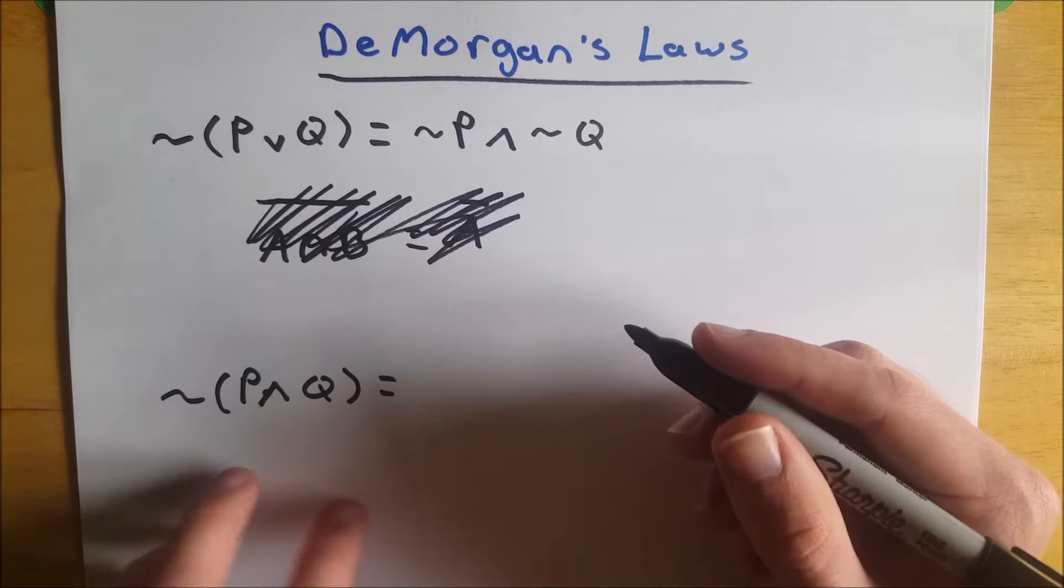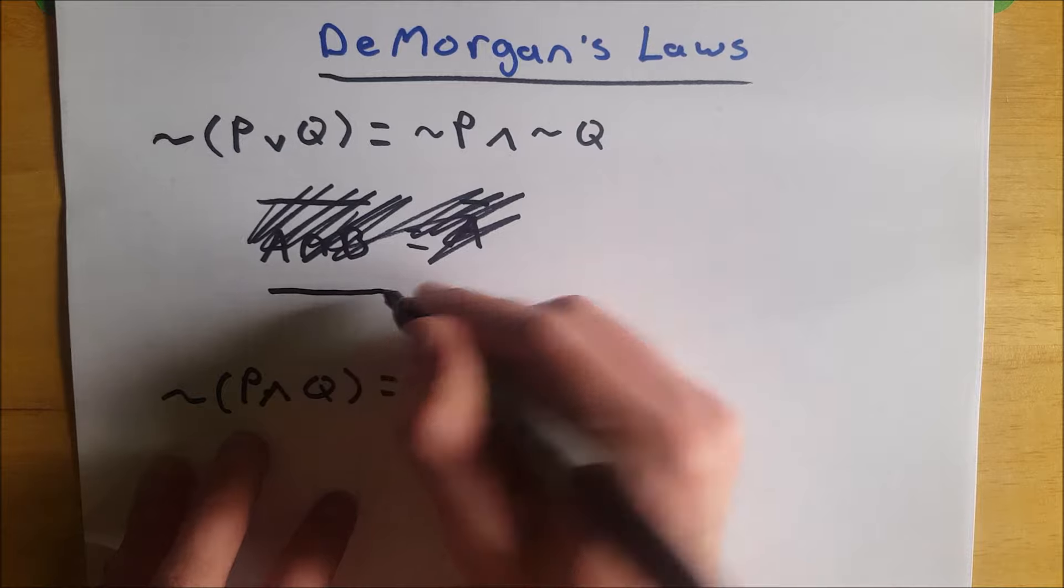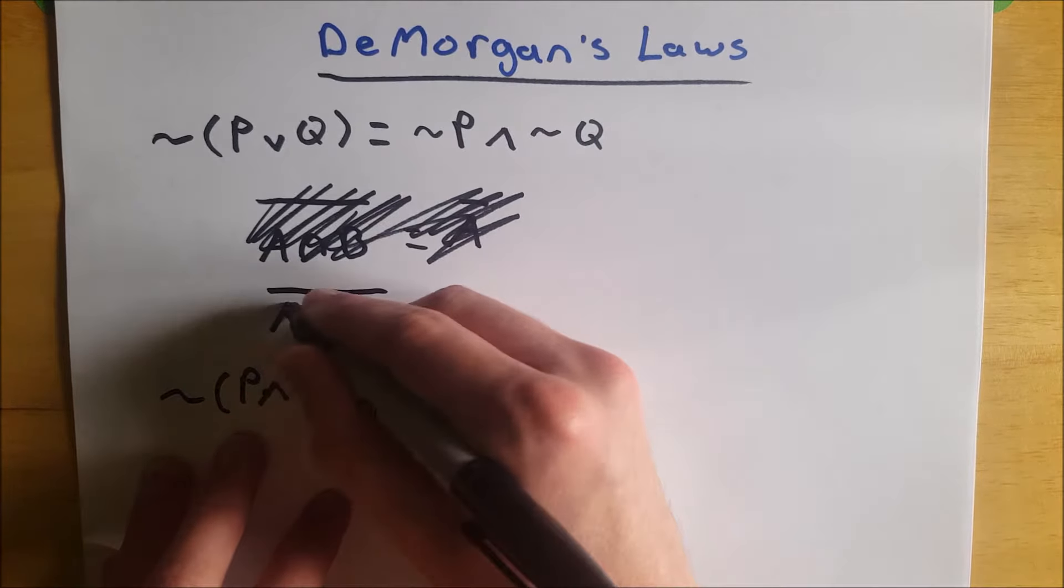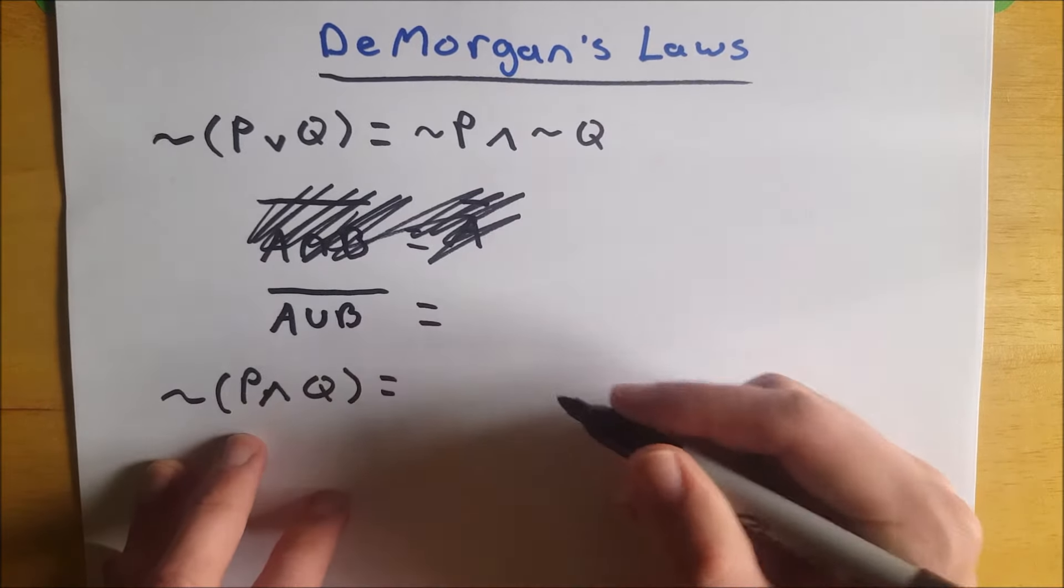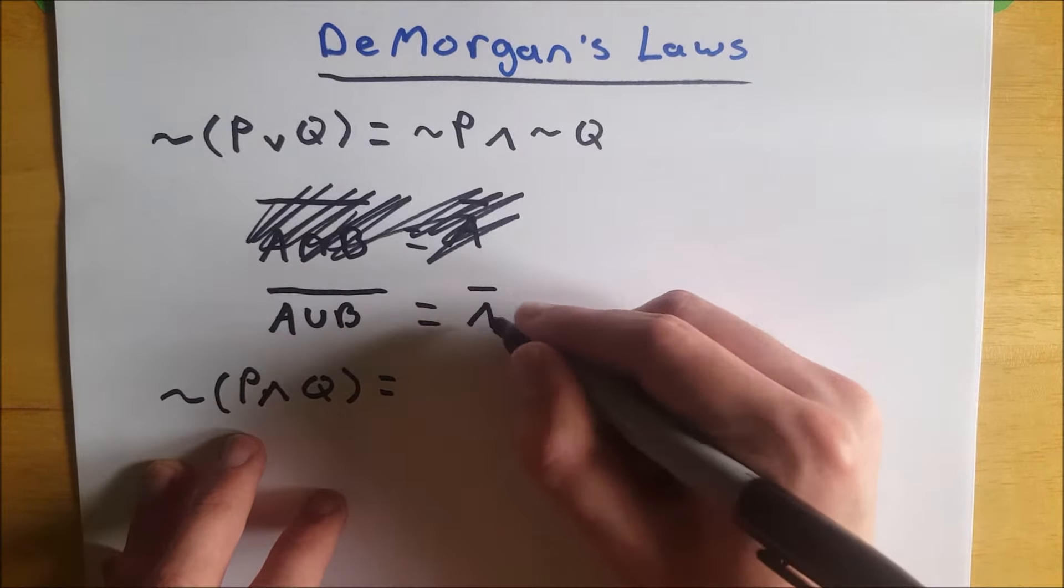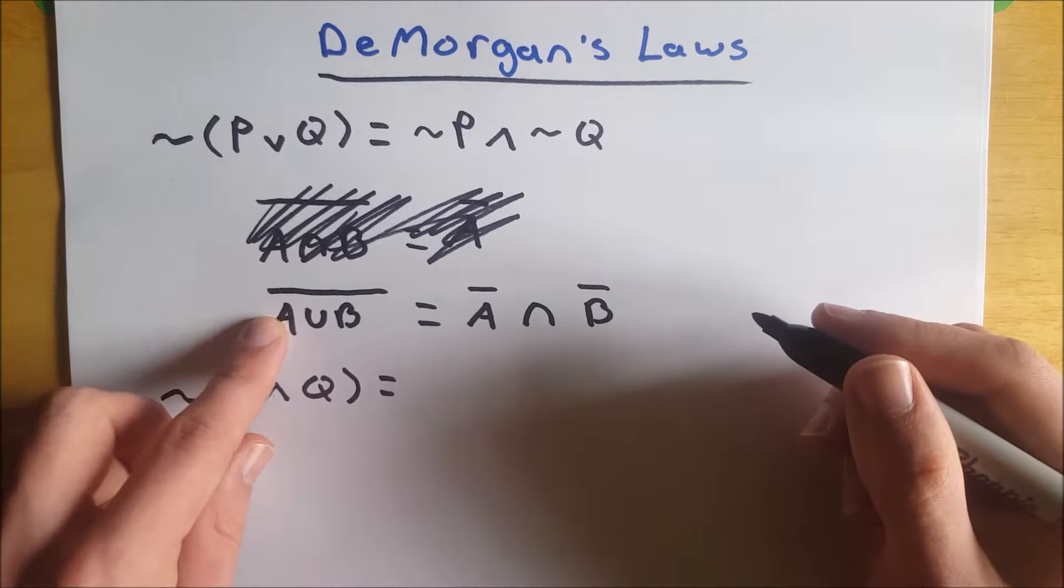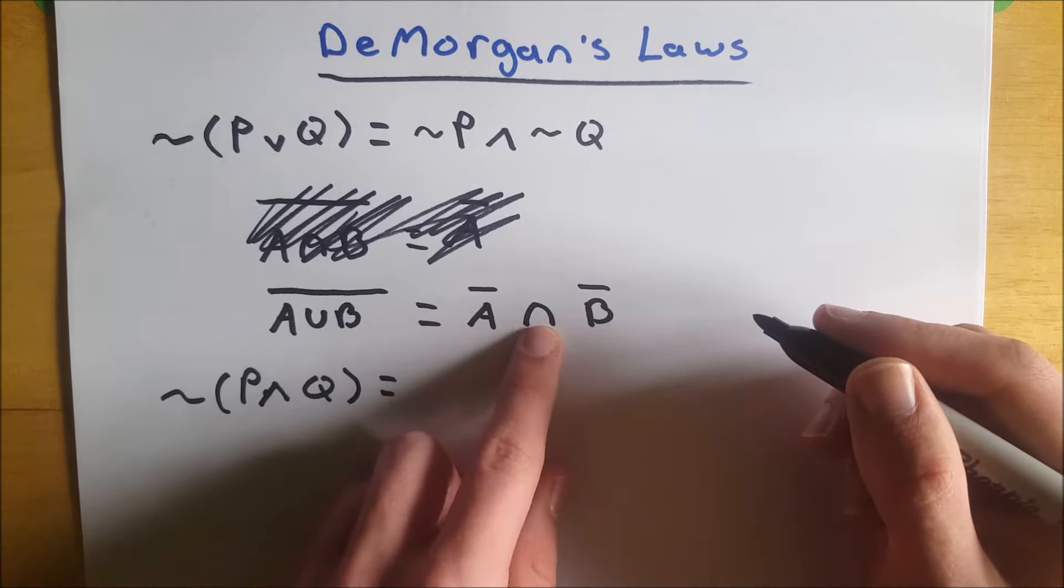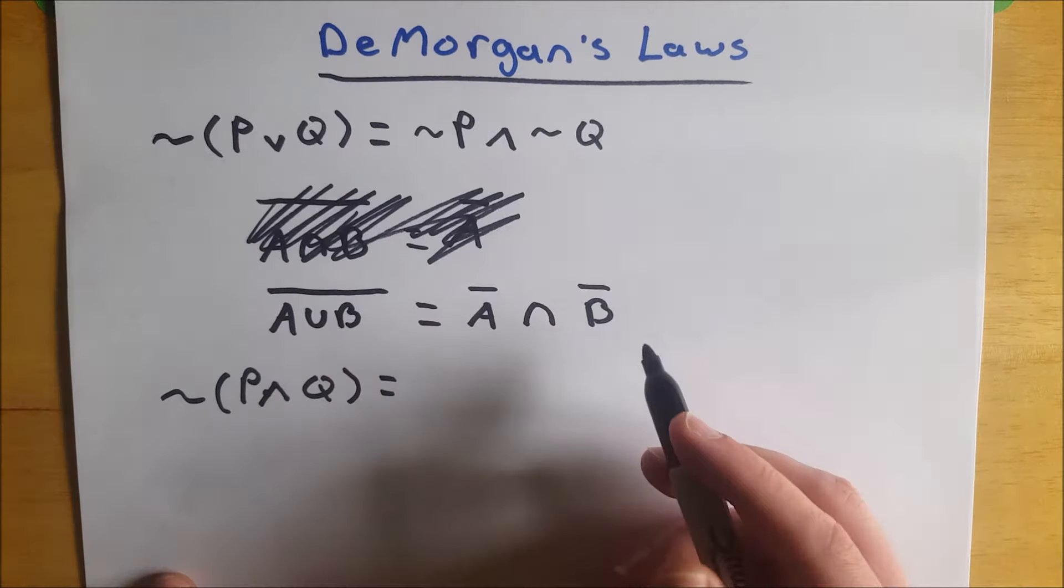Now in set notation, sorry I wrote it wrong the first time, in set notation this is a complement of A or B, which is A union B, and that will become not A intersected with not B. We just flip everything around. So A becomes not A, union becomes the intersection, B becomes not B or complement B. And that's how that works.